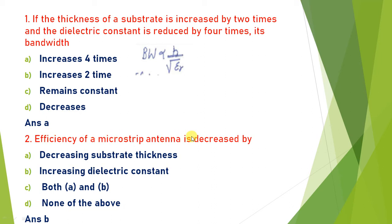The efficiency of a microstrip antenna can be decreased by increasing the dielectric constant. To increase efficiency you reduce the dielectric constant, and to reduce efficiency you increase it. Increased dielectric constant increases gain and efficiency, while reducing dielectric constant reduces efficiency. So the answer is B.